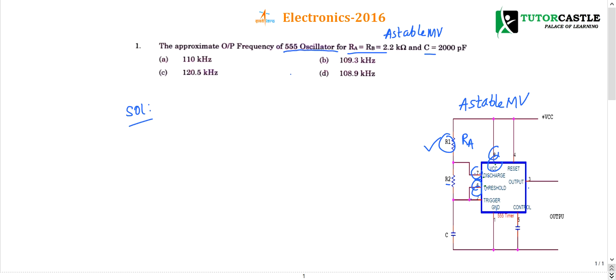And between discharge and threshold, if you connect another resistance called Rb or R2, and also if we connect a capacitor between the trigger and ground, then this type of connection of 555 timer will act as an astable multivibrator.